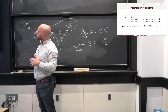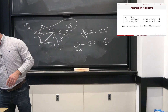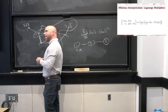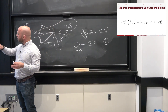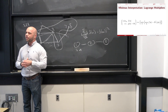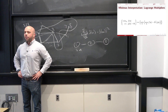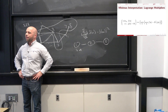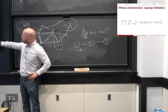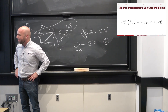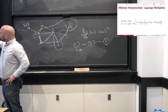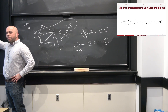I thought we'd do one example that shows up in statistics and learning all the time. The motivation comes from something we discussed a few weeks ago. If I want to solve a constrained optimization problem — minimize f(x) subject to g(x) = 0 — one way to interpret this using game-theoretic language is as a minimax problem: minimizing over x the function that maximizes over lambda the inner term.